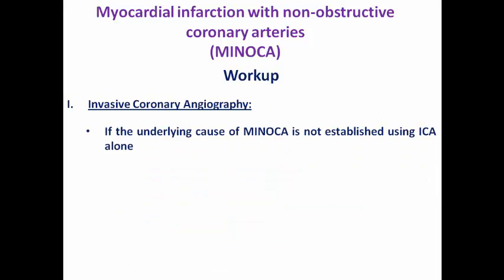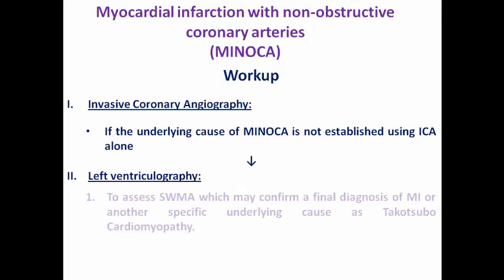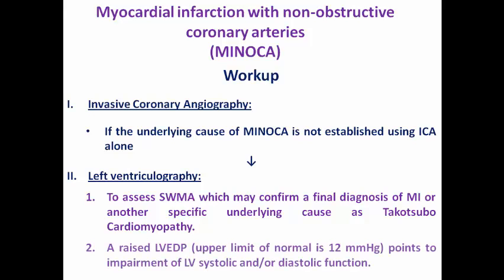Coronary angiography alone is not enough to reach the final diagnosis. We need further investigations such as left ventriculography, which assesses segmental motion abnormality to confirm MI or another specific cause like Takotsubo cardiomyopathy — showing akinesis of all apical segments not respecting a vascular territory, resulting in apical ballooning — or measuring LV end-diastolic pressure, where more than 12 mmHg suggests impairment of LV systolic and/or diastolic function.